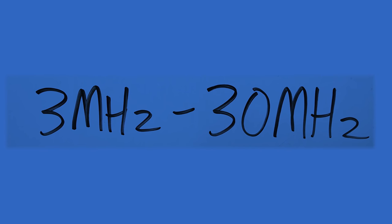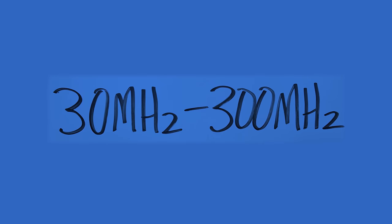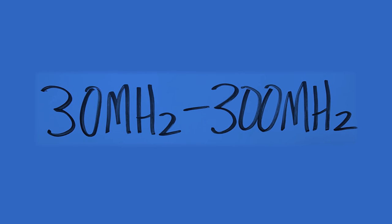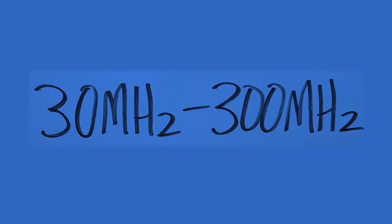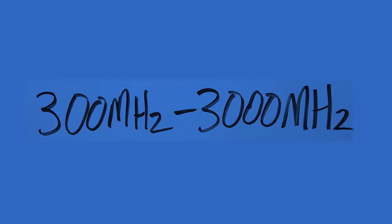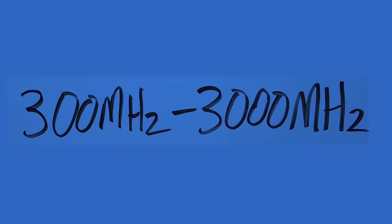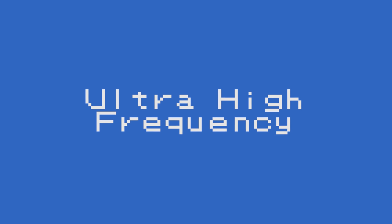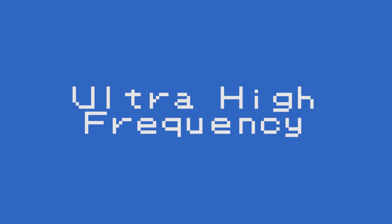From here, we move on to our higher frequency bands, starting with VHF, or Very High Frequency, from 30 MHz to 300 MHz. Here we have FM radio broadcasts and TV broadcasts. Right above that is 300 MHz to 3000 MHz — UHF, Ultra High Frequency — your favorite Weird Al Yankovic movie. This is used for TV, cell phones, and other consumer devices.